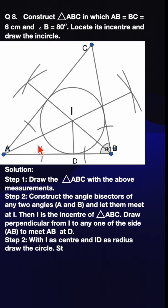With these given measurements, first draw the triangle ABC, then we are going to construct the angle bisectors of any two angles.